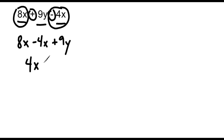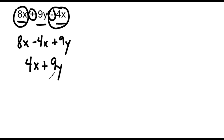And then we just bring down the 9y. There were no other y terms in this expression, so we have to leave 9y by itself. We cannot combine these two terms because they are not like terms. So this is as far as we can simplify this expression.